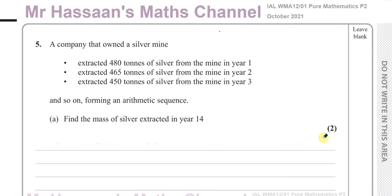It says the company that owns a silver mine extracted 480 tons of silver from the mine in year one, 465 tons in year two, and 450 tons in year three. You can see that's reducing and so on, forming an arithmetic sequence — we don't have to figure that out because they've told us that.